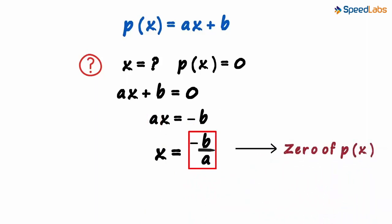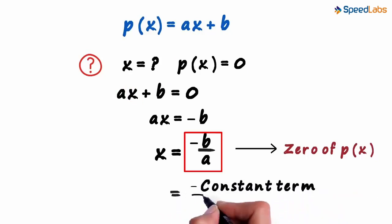That is, if we substitute minus B by A in place of X, we will get P of X equal to zero. B is the constant term and A is the coefficient of X. So the zero of this general form equals the negative of the constant term divided by the coefficient of X.